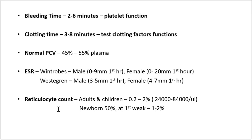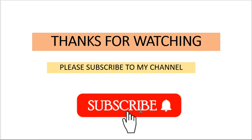Normal reticulocyte count: reticulocytes are the immature cells of RBCs, which eventually convert into erythrocytes. Normal reticulocyte count in adults and children is 0.2 to 2 percent — less than 2 percent reticulocytes in our blood. However, newborns have a very high reticulocyte count of 50 percent; by the first week it comes down to 1 to 2 percent.